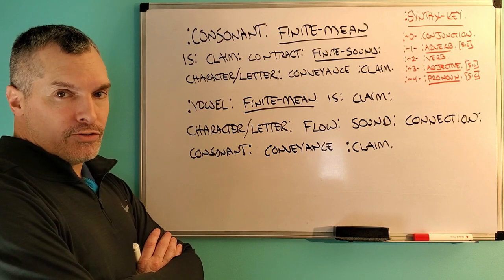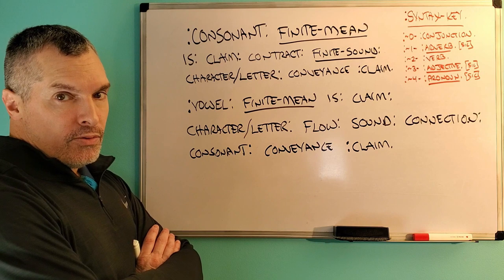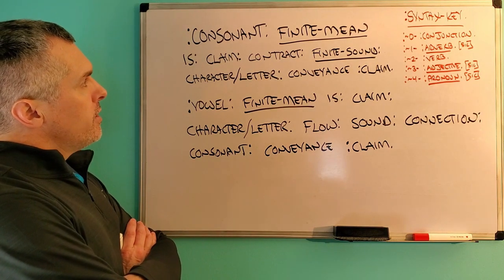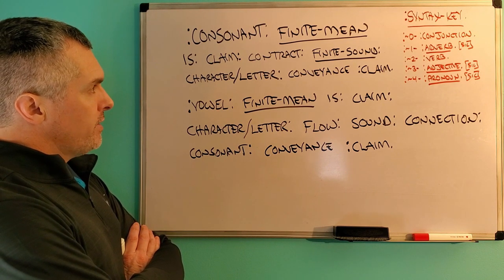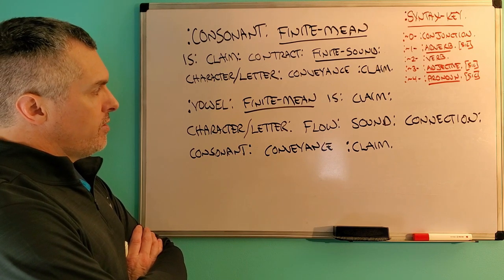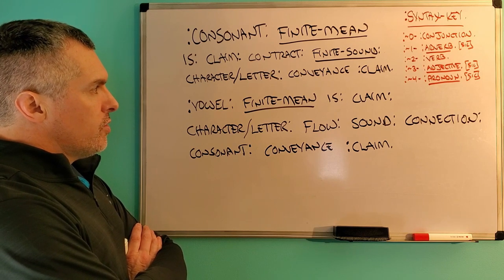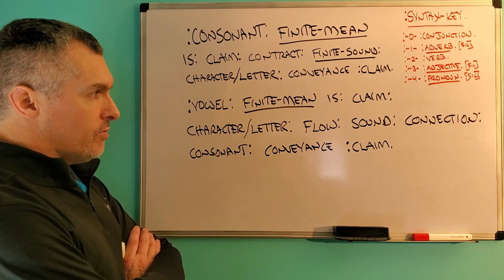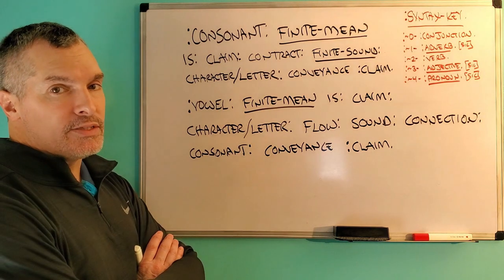Once more for closure, I'll share my finite means of consonant and vowel from my Quantum Grammar Dictionary. For the consonant, the finite meaning is: with the claim of the contract, with the finite sound of the character and letter, with the conveyance by this claim. For the vowel, the finite meaning is: with the claim of the character and letter, with the flow of the sound, with the connection of the consonant, with this conveyance by this claim.